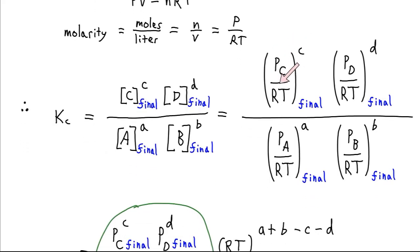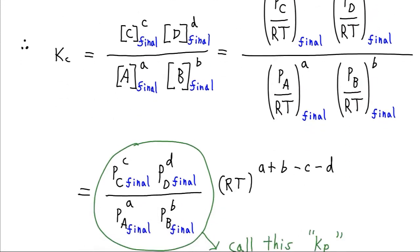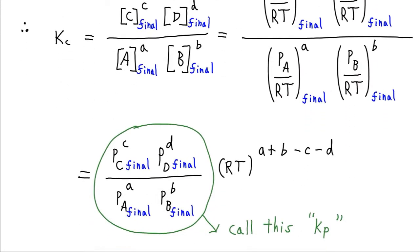And what we can do is we can collect all of these pressure terms together, and all these RT terms together. And once we have all the pressure terms collected together, so the pressure of C to the power of c, pressure of D to the power of d, pressure of A to the power of a, pressure of B to the power of b, or those powers are the stoichiometric coefficients, we're just going to call this its own new constant, Kp.